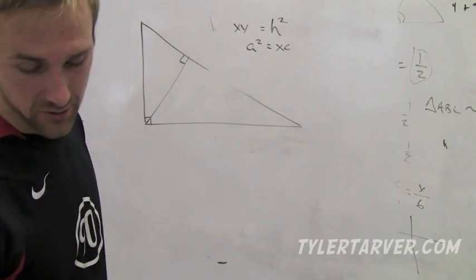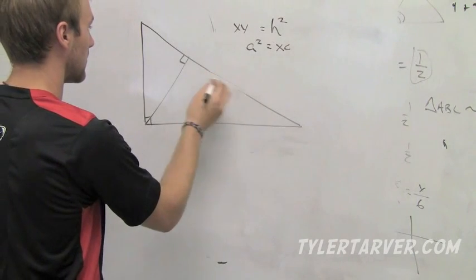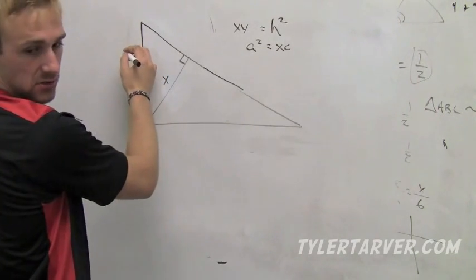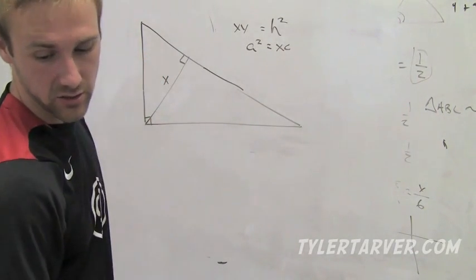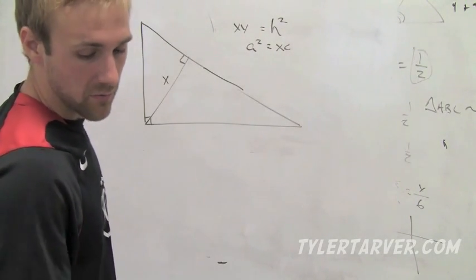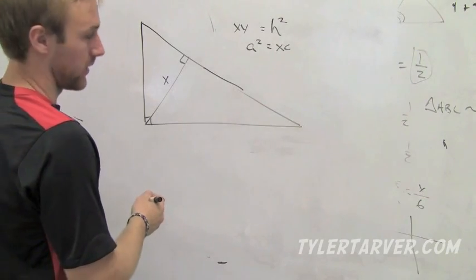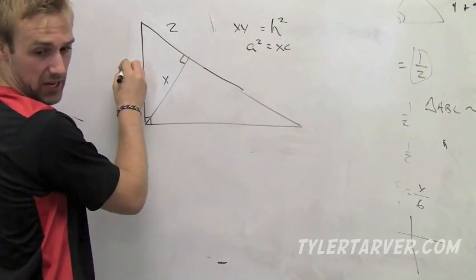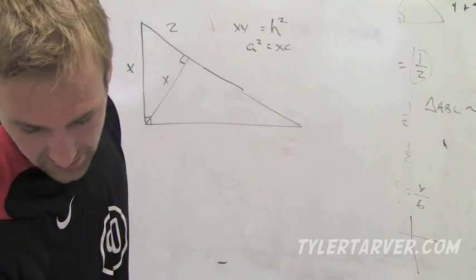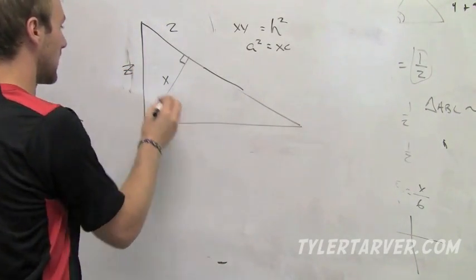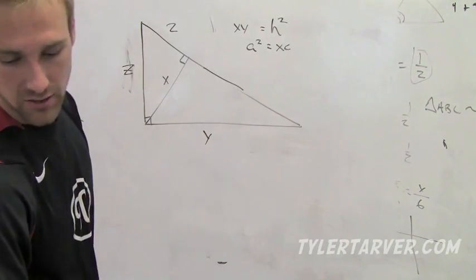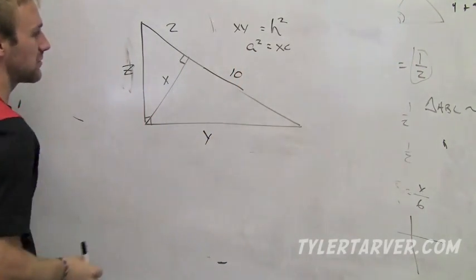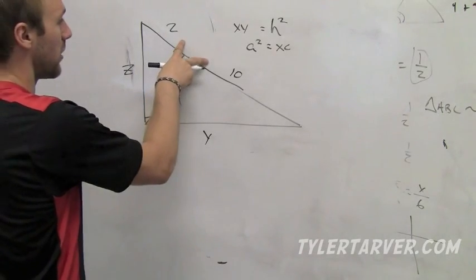Let's say this is our x right here, we'll make this z, then this will be 2, and then y, and then 10. Let's say we want to find all these measures. We know these two and we know that this is the geometric mean of these two.